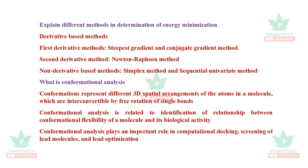There are three methods of energy minimization. The first derivative methods are the steepest gradient method and the conjugate gradient method. The second derivative method is the Newton-Raphson method. The non-derivative method is the simplex method or sequential univariate method.